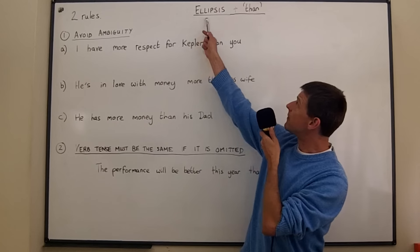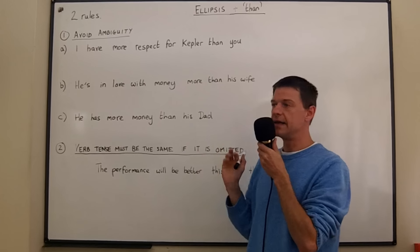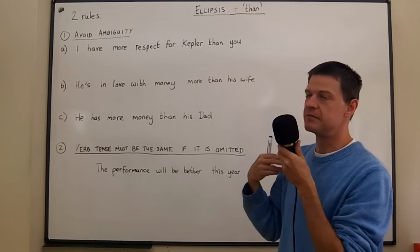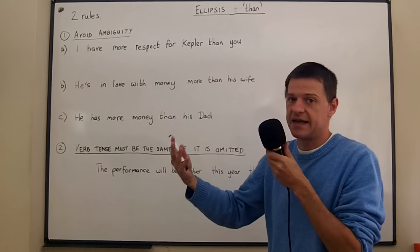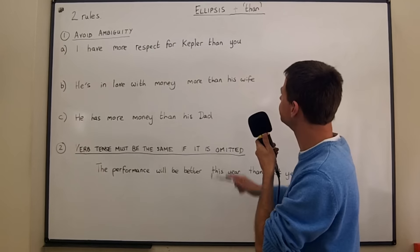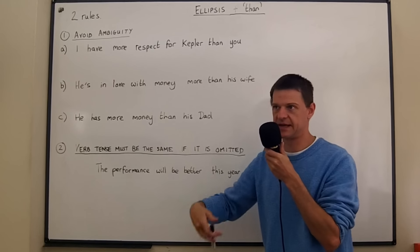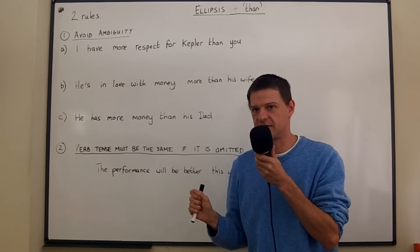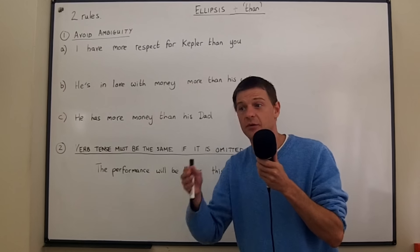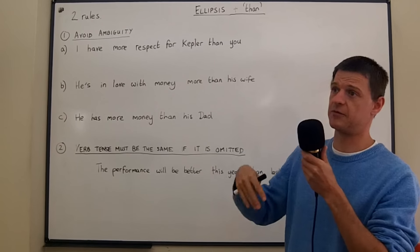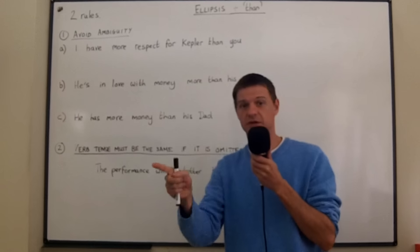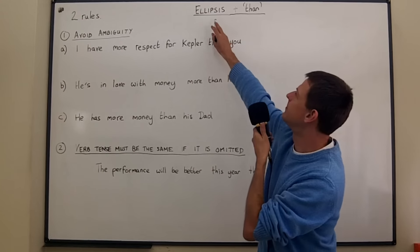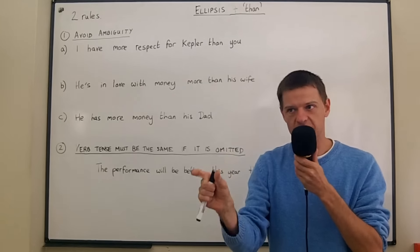Welcome to today's class, which is about ellipsis. Ellipsis means missing some of the sentence because you don't need to repeat it again in the same sentence, and this happens all the time in English. Very often we'll say something like 'I wouldn't climb that tree but you would' — we don't say 'climb that tree' a second time.